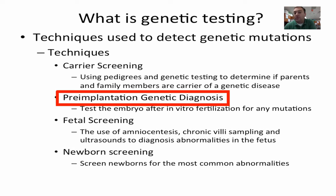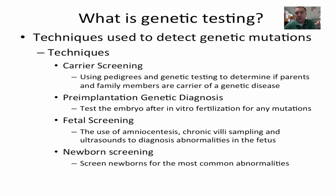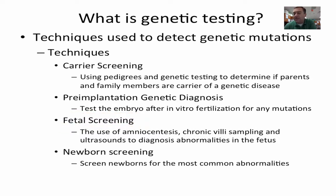Pre-implantation diagnosis is done during in vitro fertilization — fertilization in a Petri dish. Before implanting the embryos, you check them for genetic diseases, discard the ones with genetic issues, and implant the ones with the best genetic possibilities. Fetal screening is when the baby is still in the womb. The most common is an ultrasound, but if that indicates elevated risk, you can proceed to amniocentesis or chorionic villus sampling to examine the baby's actual chromosomes.